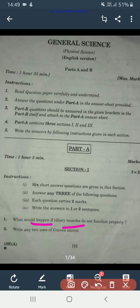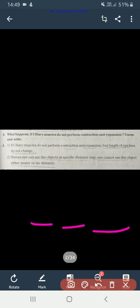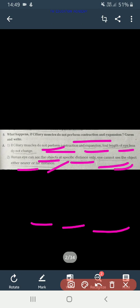First question was what would happen if ciliary muscles do not function properly? The answer, I already uploaded this same answer in the PDF. If ciliary muscles do not perform contraction and expansion, focal length of the eye lens does not change and human eye can see the objects at specific distance only. Eye cannot see the objects either nearer or at farther distance.